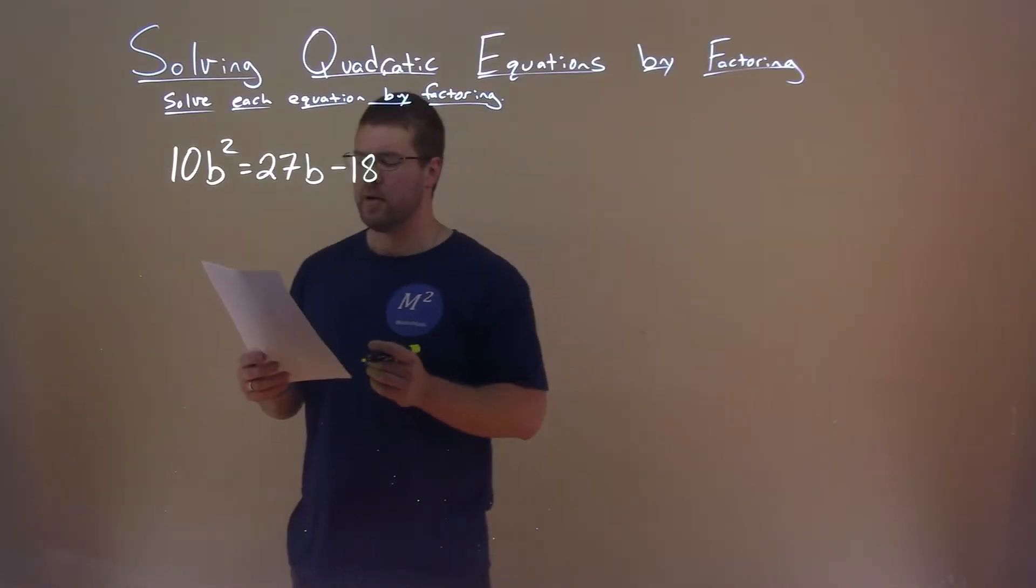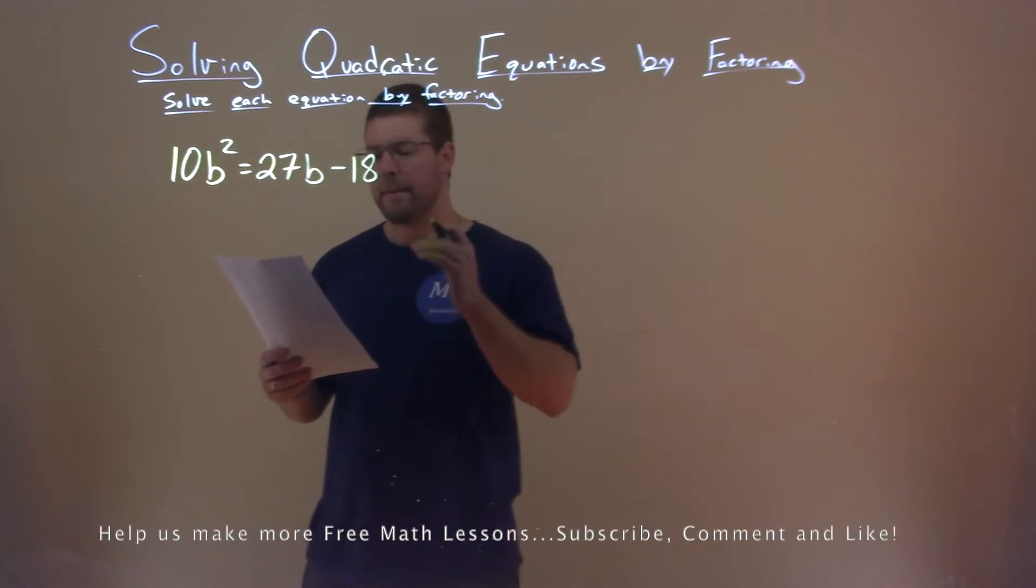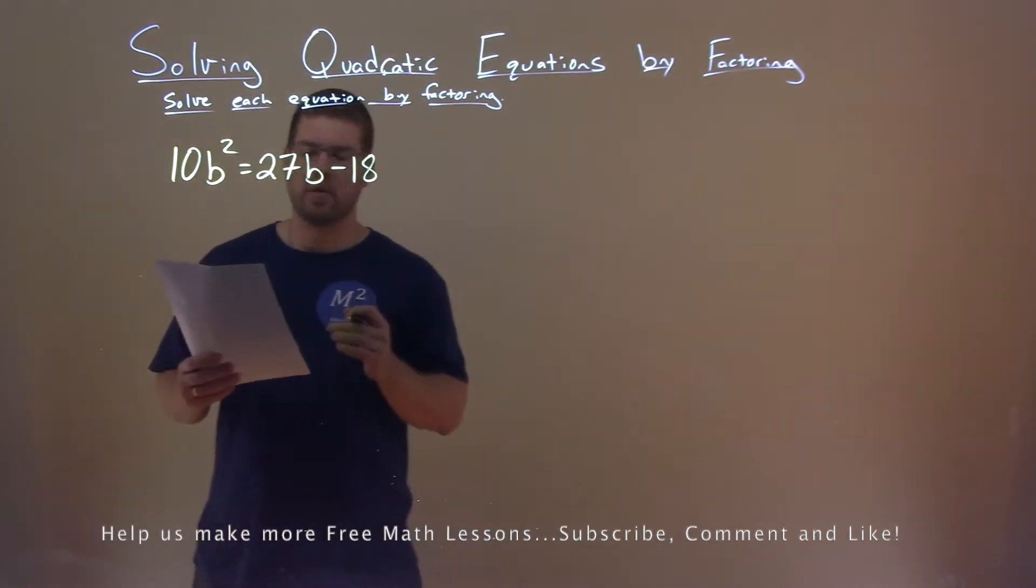We're given this problem here, 10b squared equals 27b minus 18, and we want to solve this by factoring.